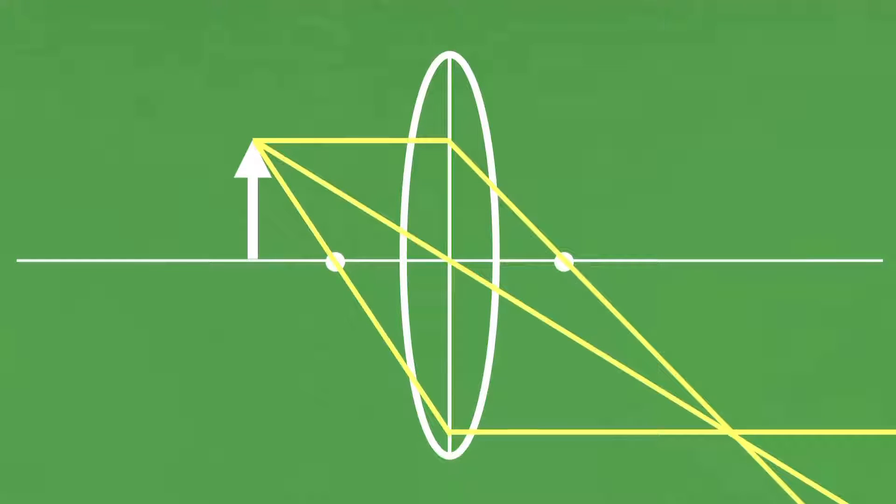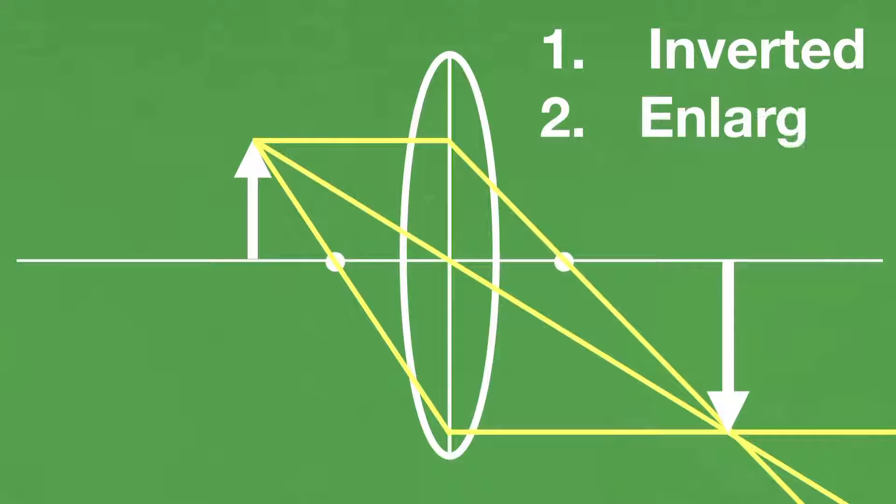Now we can see where the top of the object is, and so we can just draw it in. There are a few things to notice about this image. Firstly, it's inverted. Secondly, it's enlarged. And finally, it is real.